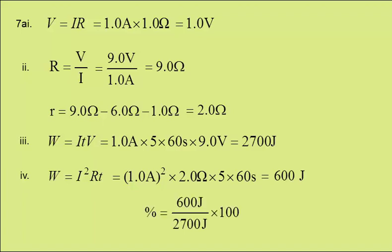The percentage, then, is 600 over 2700, times 100, which is 22%.